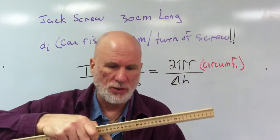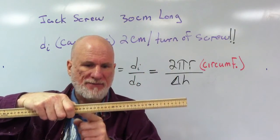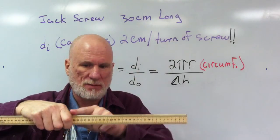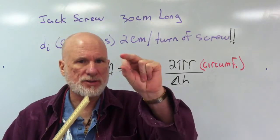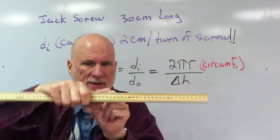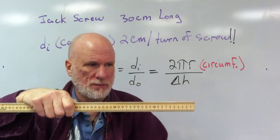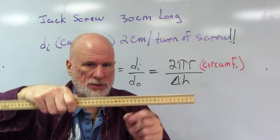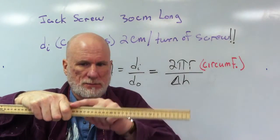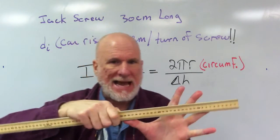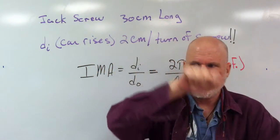So, the jack screw is going to have a handle this long. Every time I turn the handle, I raise it 2 centimeters. So every time I turn this handle, 30 centimeters long, that's on a wheel. So that's actually the radius of the circle, isn't it? All right, so it's like this.